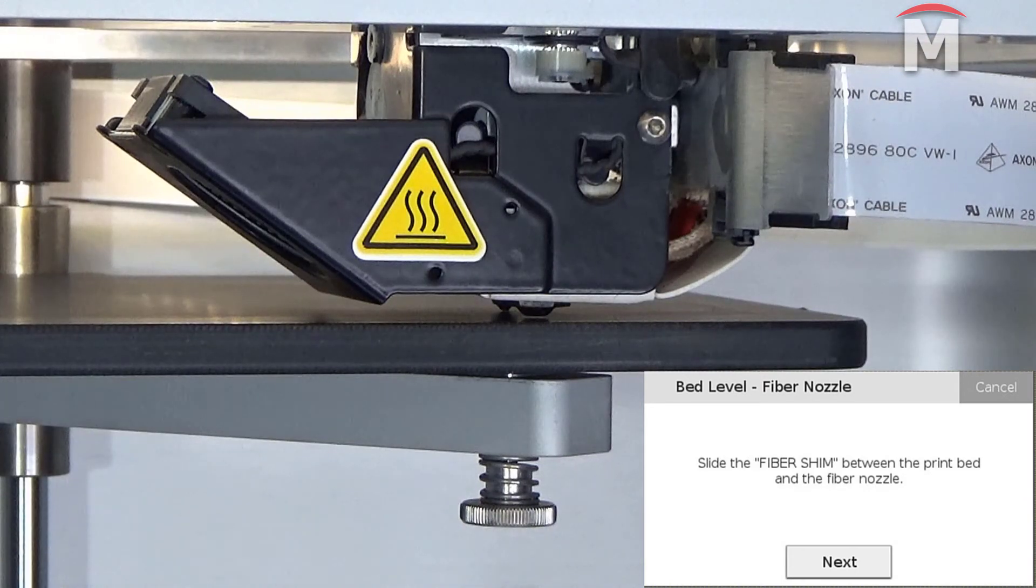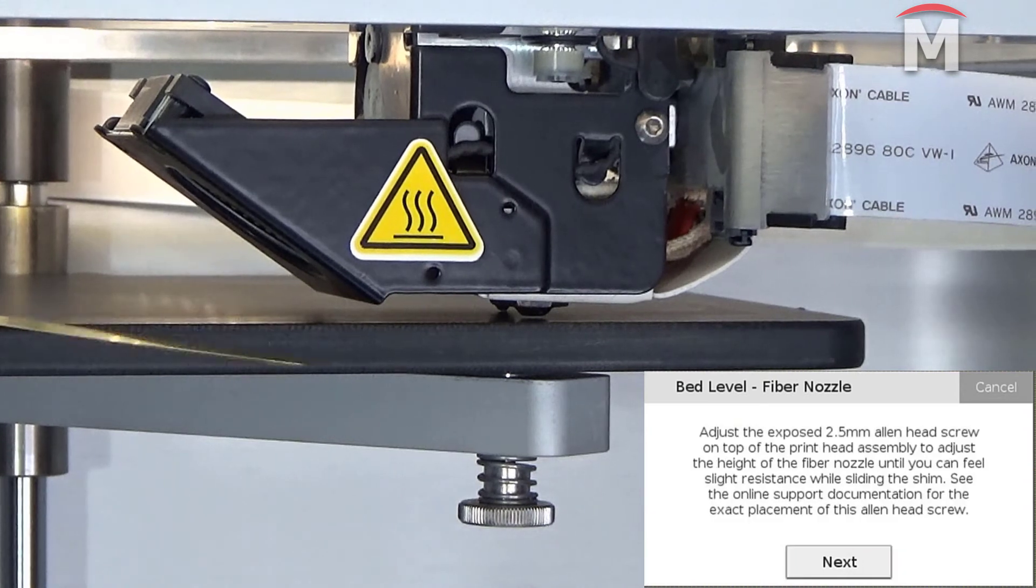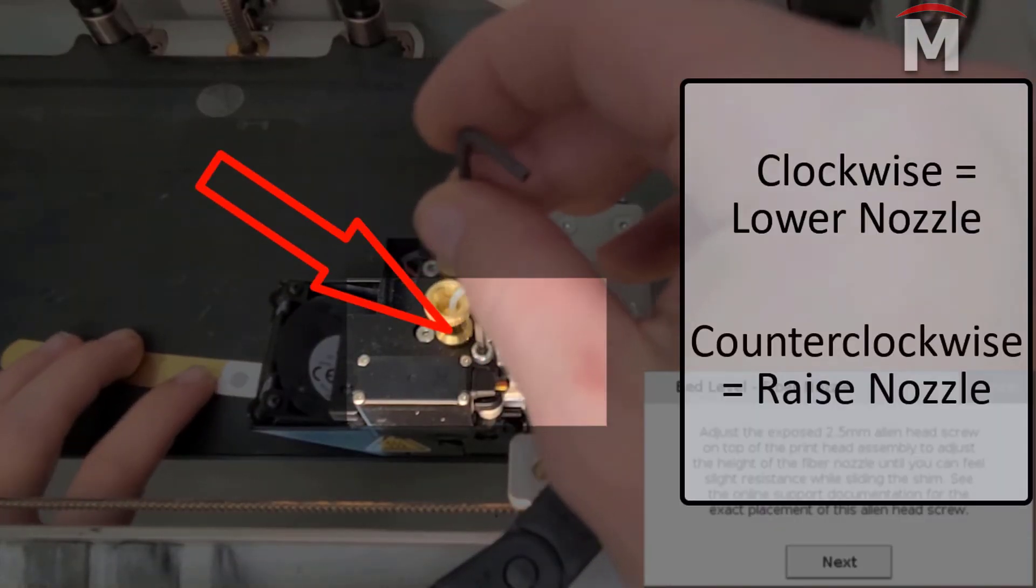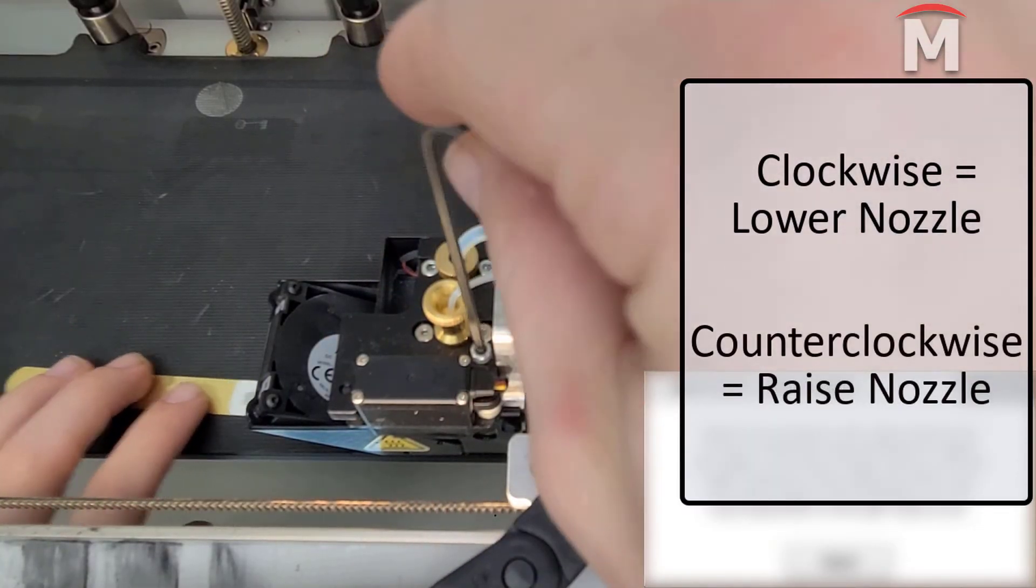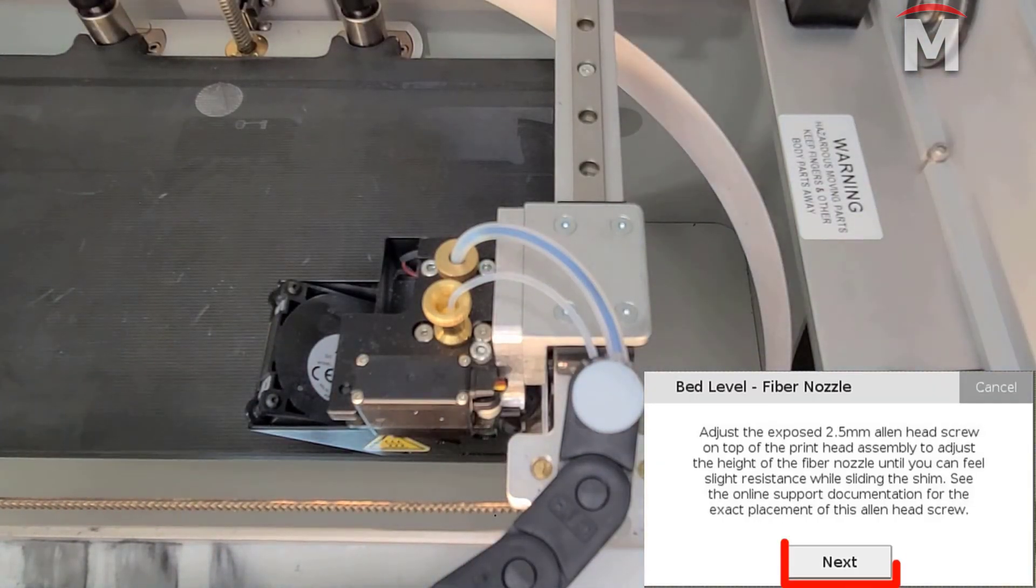Now, we will slide our fiber shim between the fiber nozzle and the print bed and hit next. As prompted, we are going to use our 2.5mm hex key to adjust the fiber nozzle height until we feel a slight resistance on the fiber shim, just like we did with the plastic nozzle and plastic shim.